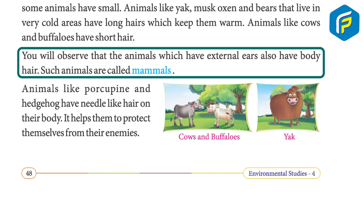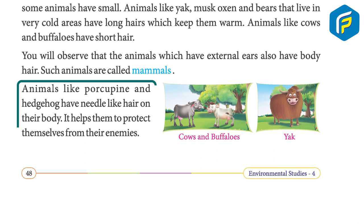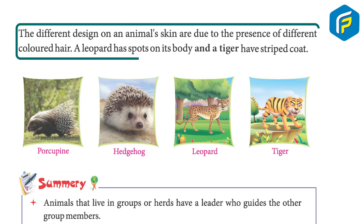Animals like porcupines and hedgehogs have needle-like hair on their bodies, which helps protect them from enemies. The different designs on an animal's skin are due to the presence of different colored hair. For example, a leopard has spots on its body and a tiger has a striped coat.